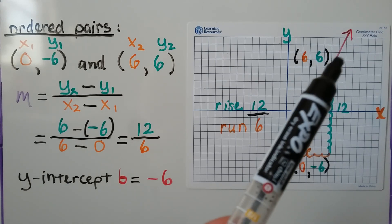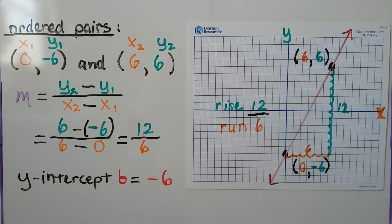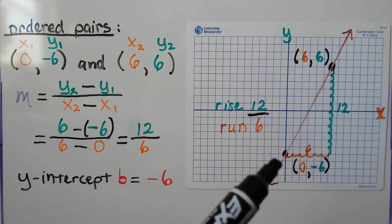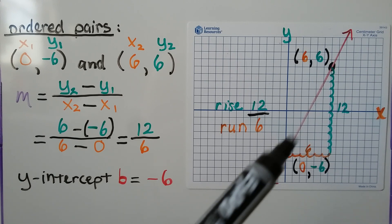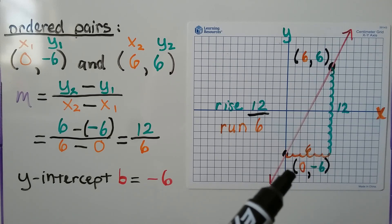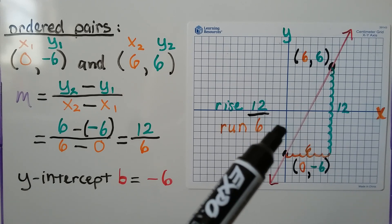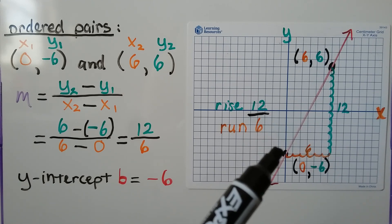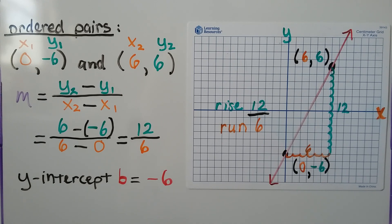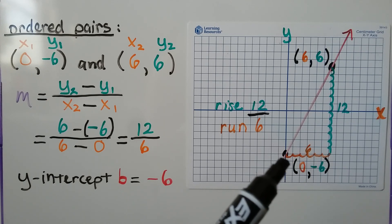Here we have another graph. It's rising to the right, so we know our slope is going to be a positive number. We can count where the graph is crossing the y-axis, and we can also look at the ordered pair — it's (0, -6). Since x is 0, we know negative 6 is our y-intercept. We can count it: 1, 2, 3, 4, 5, 6 into the negative. We can count the rise and the run — the rise is 12 and the run is 6, so we have 12 over 6 for our slope.